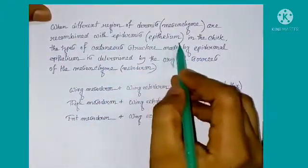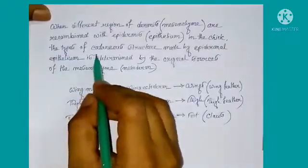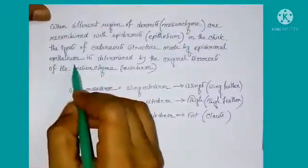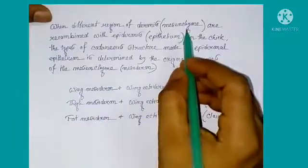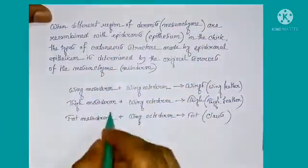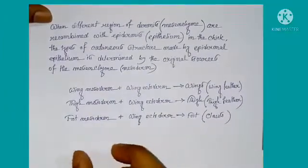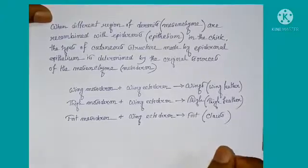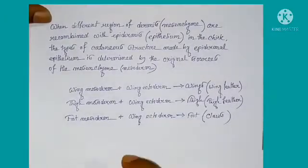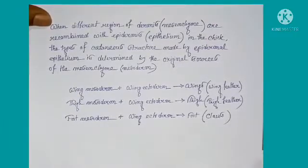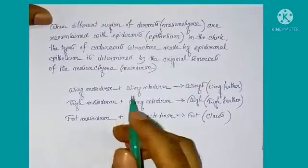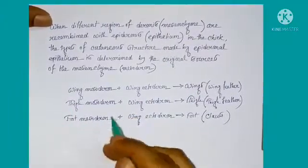When different regions of dermis or mesenchyme are recombined with epidermis or epithelium in the chick, the types of cutaneous structures made by the epidermal epithelium are determined by the original source of the mesenchyme. If the mesenchymal cells are recombined with the epidermis tissue, the type of cell formed is determined by the mesenchymal cell. If the origin of the mesenchymal cell is the thigh region, the ectodermal cell forms thigh tissue; if from the foot region, it forms the foot structure; if from the wing, the ectoderm forms wing structure.